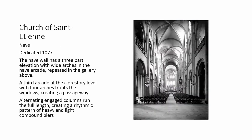Inside, it's a three-part elevation with very wide arches in the nave arcade, a gallery above it, and a clerestory with a third arcade and a passageway. We have alternating columns — dark and light, heavy and light — creating a rhythm. This heavy-light, heavy-light rhythm we've seen before. The emphasis is longitudinal, directed up toward the front toward the apse.